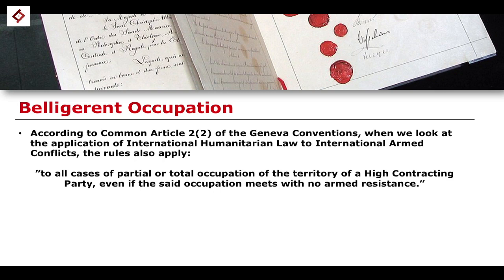Essentially what this does is place the idea of belligerent occupation under the remit of the broader concept of international armed conflicts. That's why we're covering belligerent occupations before moving on to non-international armed conflicts, because this is essentially another type of international armed conflict — even if there is no resistance to the belligerent occupation in question, as seen in the second line of Common Article 2.